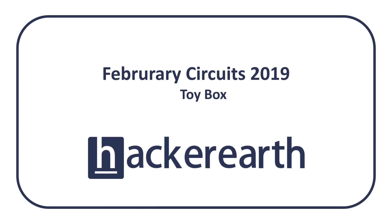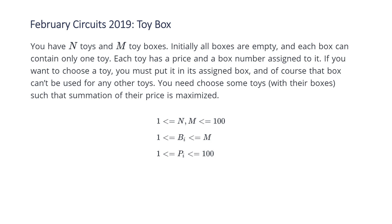Welcome to a Code Report Solution video. In this video we're going to be covering the solution to the problem entitled Toy Box from the Hacker Earth February Circuits 2019 contest. The problem states you have N toys and M toy boxes. Initially all boxes are empty and each box can contain only one toy. Each toy has a price and a box number assigned to it. If you want to choose a toy you must put it in its assigned box, and that box can't be used for any other toys. You need to choose some toys with their boxes such that the summation of their price is maximized, and we need to find this maximum price.